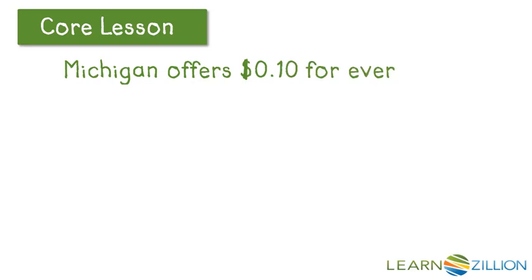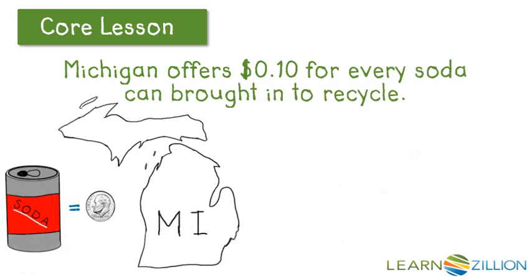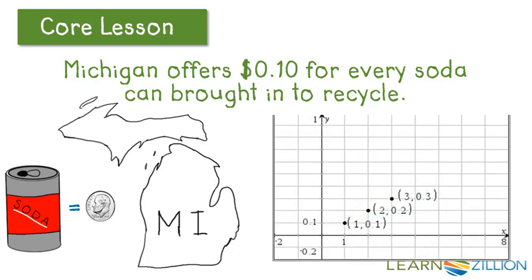Across the map, Michigan offers 10 cents for every soda can brought in to recycle. So checking out those input and output pairs, one can yields 10 cents, two cans yields 20 cents, and three cans yields 30 cents. We put these input-output pairs on a graph.